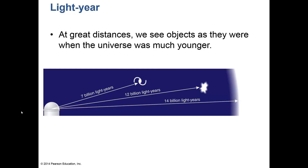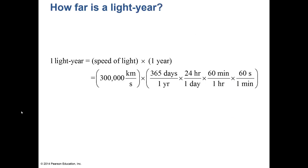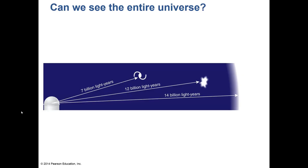At even greater distances we see objects as they were when the universe was much younger. We have now taken pictures of galaxies when the universe was only 500 million years old — that was 13 billion years ago. We can convert a light year into seconds and minutes based on how fast light travels.